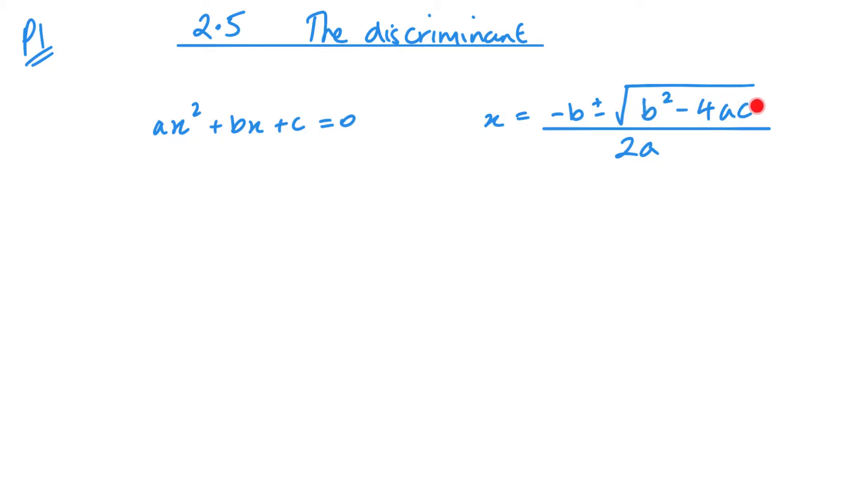But if this B squared minus 4AC ends up being 0, then we actually get rid of, we don't have a plus or minus anything, because plus or minus 0 would stay the same. So we end up with just a single root, a single solution.